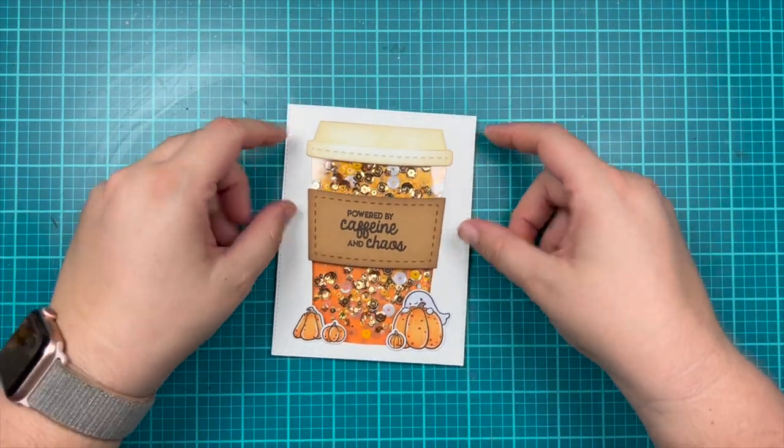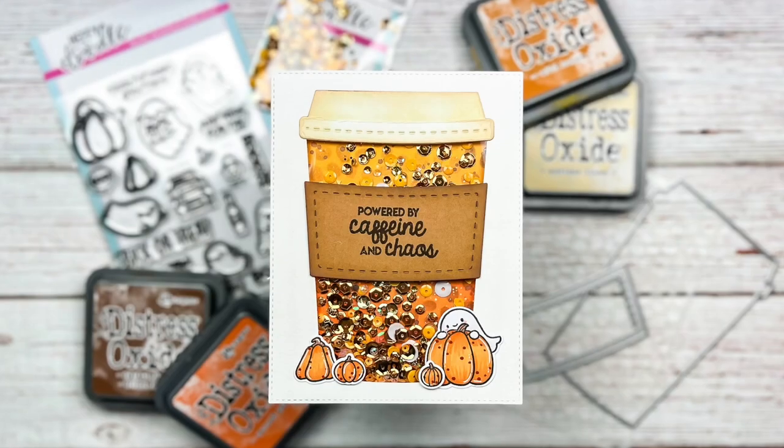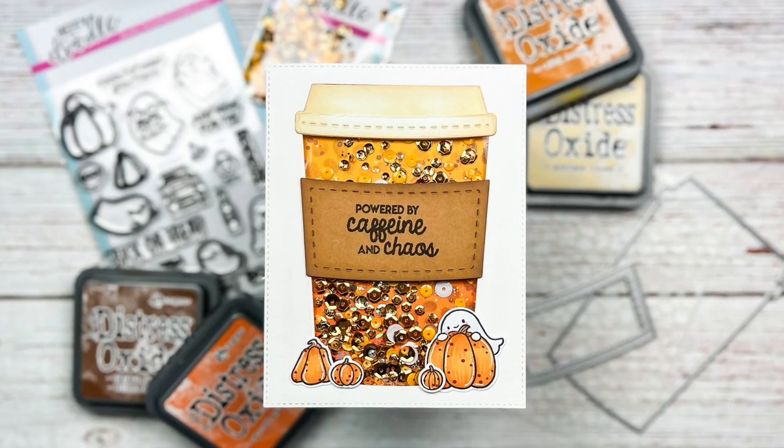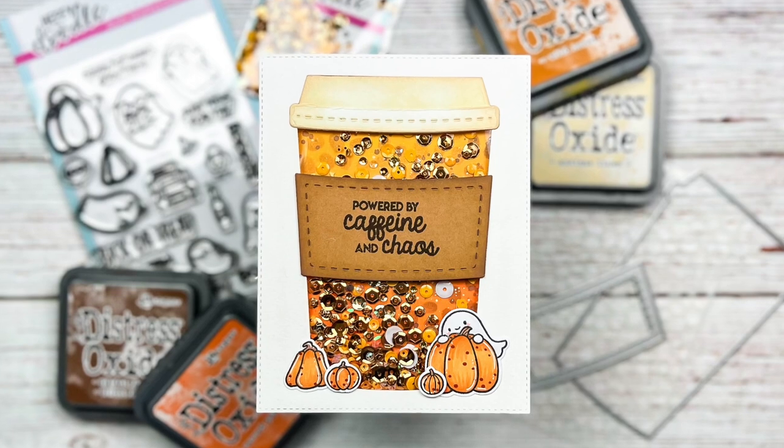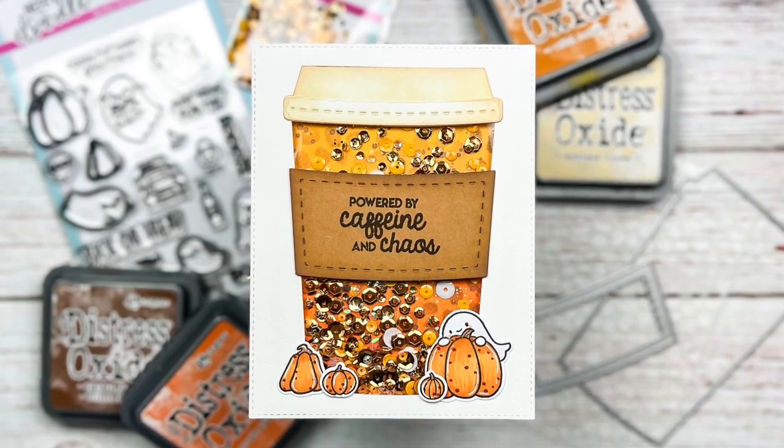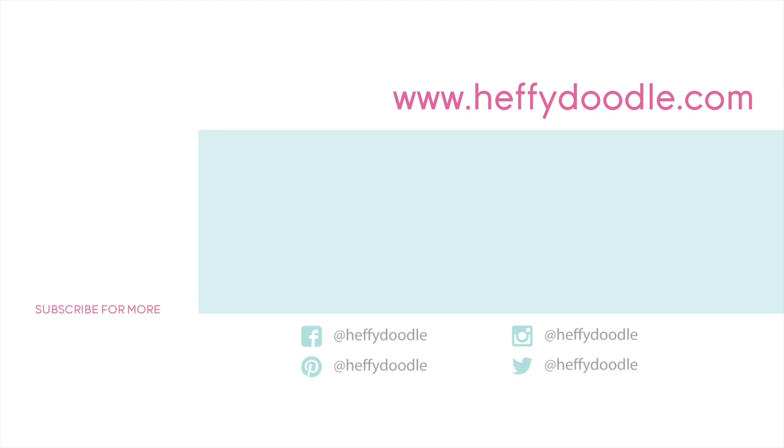Here is a final look at this fun pumpkin spice shaker card. I hope you learned more on how to use this brand new die set and that you have a lot of fun creating coffee and tea type cards this season. You can find a list of everything I used down below, and don't forget to find us on social media: Facebook, Instagram, Pinterest, and more. Have a great day!